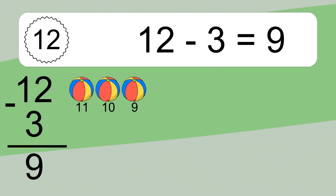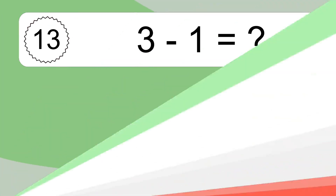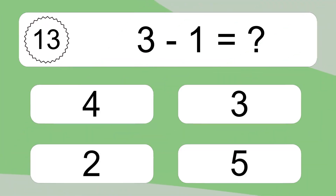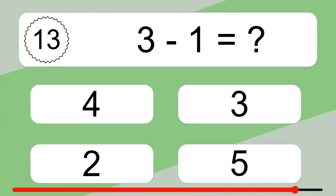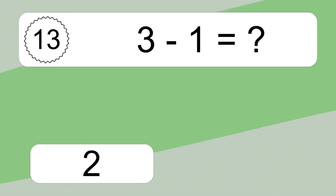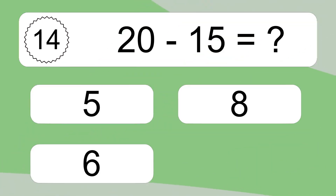12 minus 3 equals 9. Let's count it: 11, 10, 9. 3 minus 1 equals what? 3 minus 1 equals 2. Let's count it: 2. 20 minus 15 equals what?